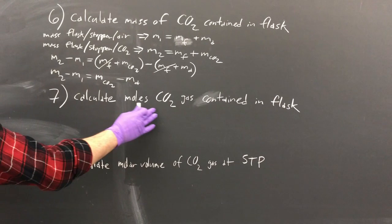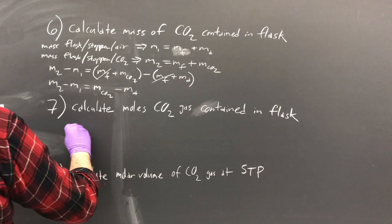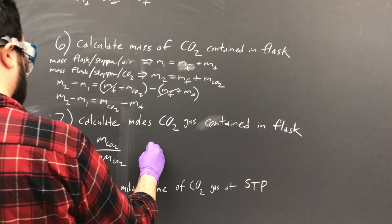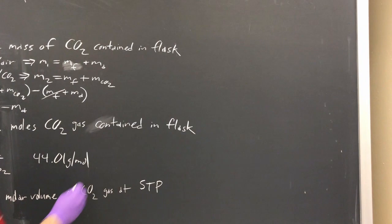So from seven, calculate the moles of CO2 gas contained in the flask. So this is just N moles equals the mass of CO2 over the molar mass of CO2. And the molar mass of CO2 is 44.01 grams per mole.